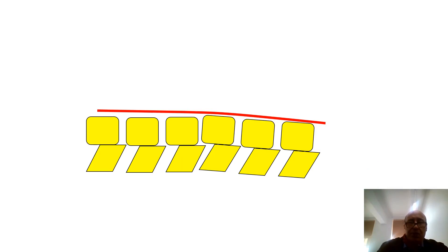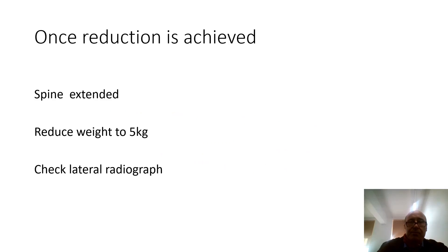Once you've achieved reduction, you can drop the head back into extension — that's why we use a double mattress. Then reduce the weight down to 5 kg of maintenance traction. Once reduction is achieved, extend the spine, drop the weight to 5 kg, and do a check x-ray to confirm you have good reduction.